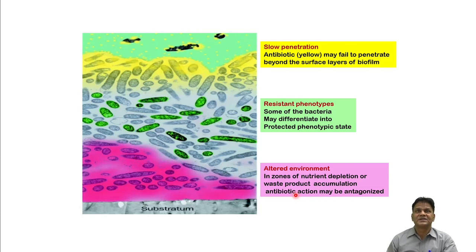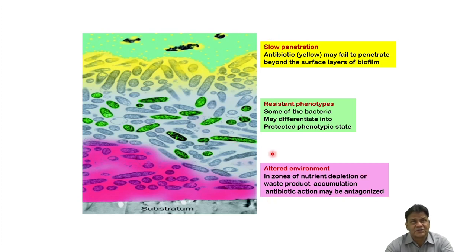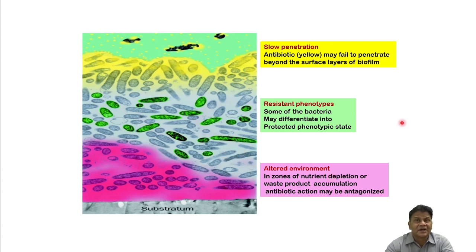Biofilm allows slow penetration, resistant phenotypes may evolve due to the quantity of infection, and the local environment is altered — all leading to poor antibiotic activity. The thick layer formation, poor penetration, development of resistant phenotypes, and altered environment together lead to chronicity of infection. Conventional antibiotics are unable to cure biofilm-associated infections.